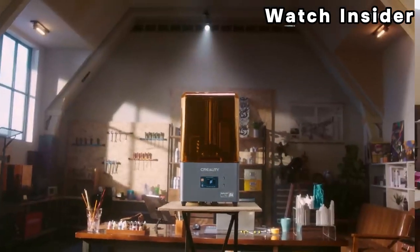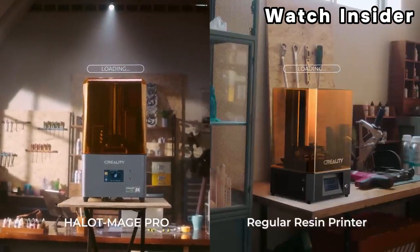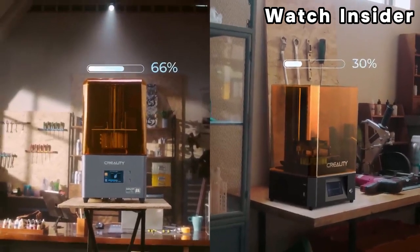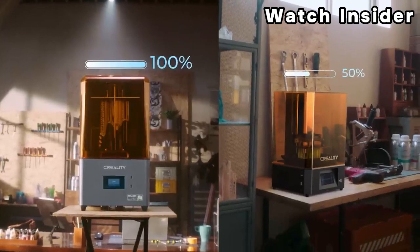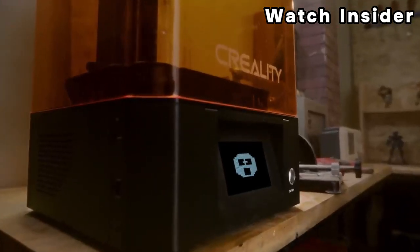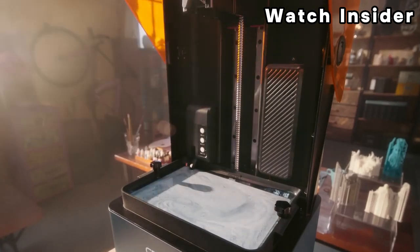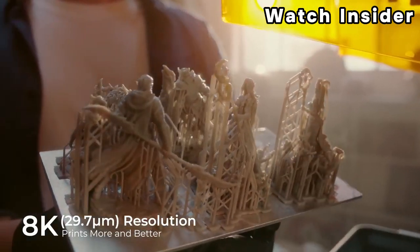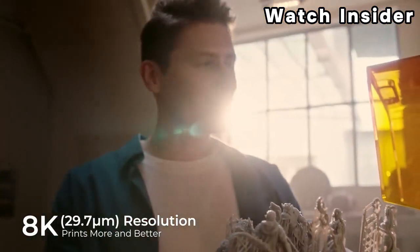Resin printers use UV light to cure the resin and solidify each layer of the printed object. The Halot Mage is likely to feature a UV LED light source for this purpose. Creality's resin printers often boast fast printing speeds, enabling users to produce models efficiently and reduce overall print times.